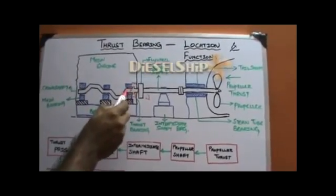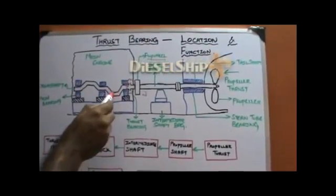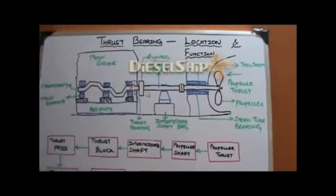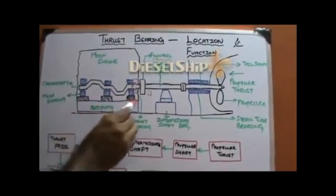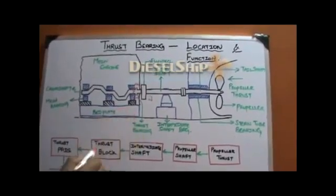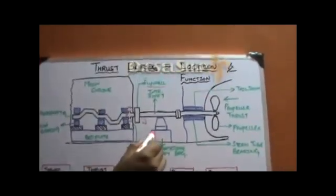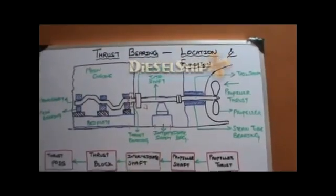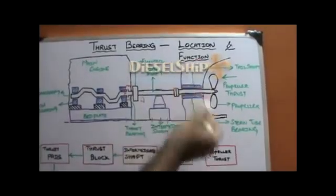After the thrust block comes the main bearing, the crank web, the crank pin, and again a main bearing — and thus the crankshaft continues. All the main bearings and thrust bearings are supported by the main engine bed plate, which is bolted down to the ship's hull. The intermediate shaft bearing is also bolted down to the ship's hull, and the stern tube bearing forms part of the aft peak bulkhead and tank.